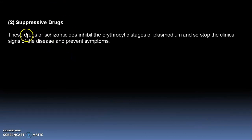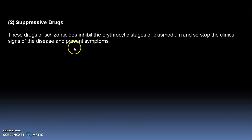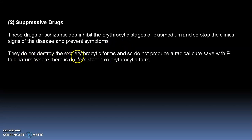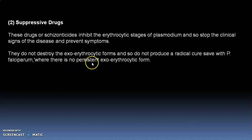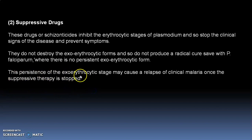Suppressive drugs, or schizonticidal drugs, inhibit the erythrocytic stage of the Plasmodium, thereby stopping the clinical signs of the disease and preventing symptoms. They do not destroy the exo-erythrocytic forms and do not produce a radical cure, except with Plasmodium falciparum where there is no persistent exo-erythrocytic form. The persistence of the exo-erythrocytic stage may cause a relapse of clinical malaria once the suppressive therapy is stopped.